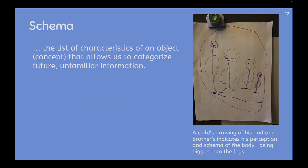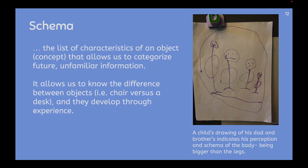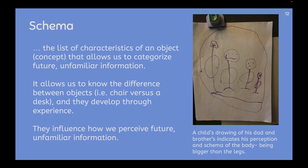Schema is the list of characteristics of an object or concept that allows us to categorize future unfamiliar information. It allows us to know the difference between objects — for example, a chair versus a desk, or a mother versus a father in a picture, or a child versus an adult. A child's drawing of his dad and brothers indicates his perception and schema of the body being bigger than the legs, because at this age — probably two or three years old — that's the way he sees the world. It influences how you will perceive future and unfamiliar information. Notice that the smiles are really big and giant — that means this kid experiences the world as grown-ups being happy.